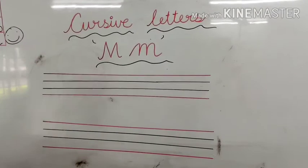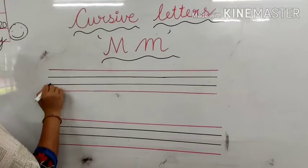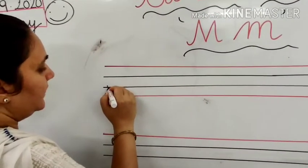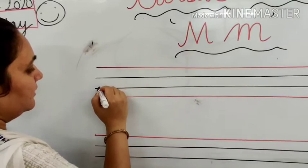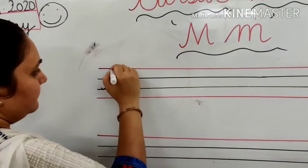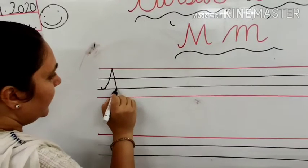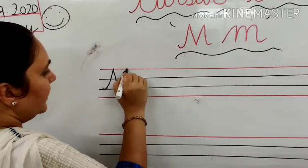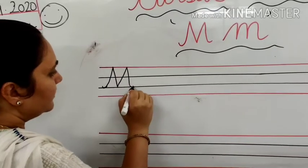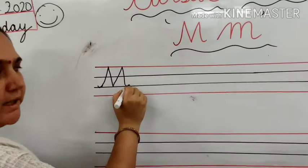See children. Start from the third line. We will draw a slant line. Go up, down, touch the third line. Again go up and come down like this. This is called capital cursive M. Clear.